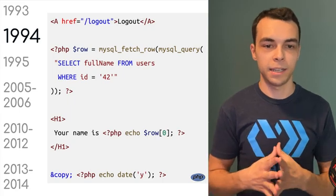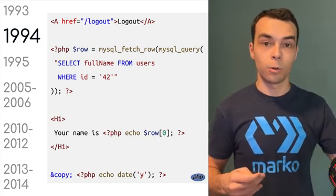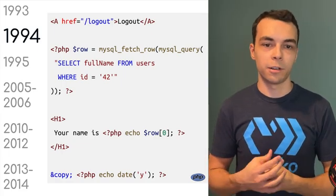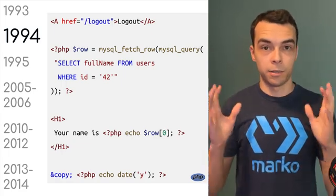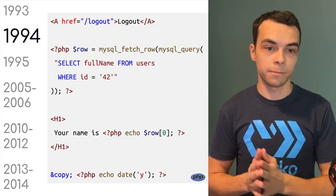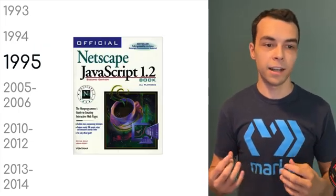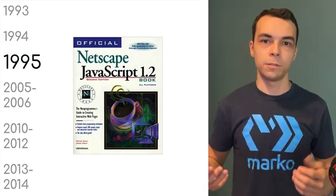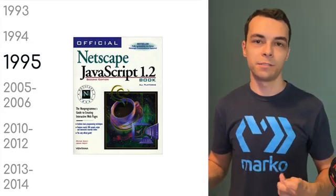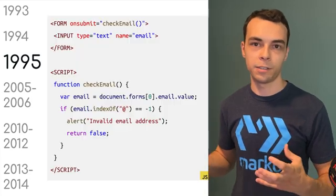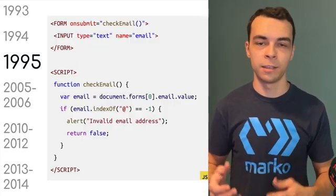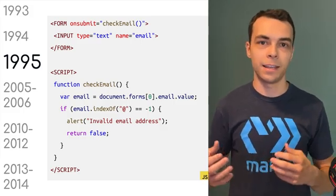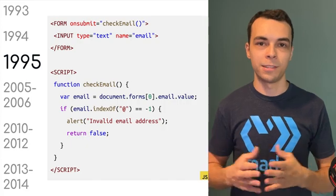A PHP application could request data from a database and interpolate dynamic content for users, which was really powerful — you could build a lot of types of applications this way. Moving on to 1995, a challenger arises. We see JavaScript for the first time, recommended as a tool to enhance an existing HTML application. For example, one recommendation was to use it to enhance forms so you could show error messages earlier. But people also used it for more nefarious things like flashing pop-ups and scrolling banners, reminiscent of that 90s era.